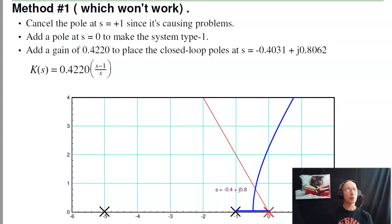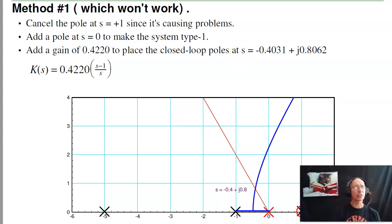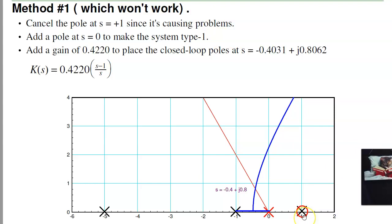Now the first approach, this is one that won't work. What I'm going to do is take that pole at plus one and get rid of it. Put a zero right on top of it. Add a pole at s equals zero that makes the type one. So these two poles come together, split apart, find the point on the root locus where the damping ratio is .4559, 20% overshoot.